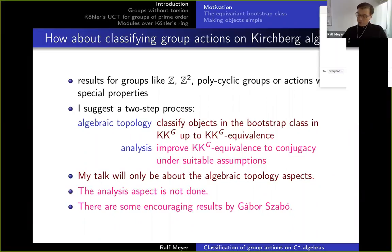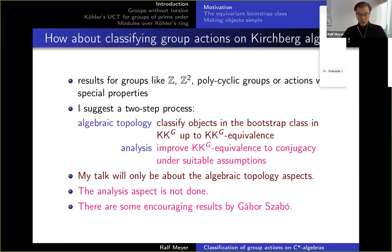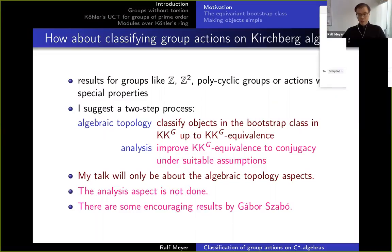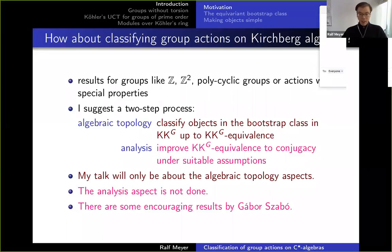Then there is an analysis problem: you want to improve such a KKG equivalence to conjugacy, under suitable assumptions. Notice that in the first aspect, algebraic topology, I just spoke about objects in KKG — I didn't say simple or purely infinite. If I have any object in KKG, I would try to make it a Kirchberg algebra by replacing it with something KKG-equivalent to it. The analysis step might require all these adjectives, but the K-theory classification can be done independently.